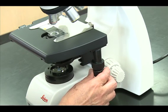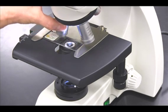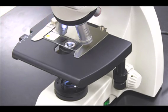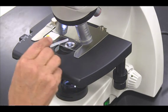To use the oil immersion objective, rotate the nose piece halfway between the 40x and the 100x objective. Place a small drop of oil in the center of the slide.